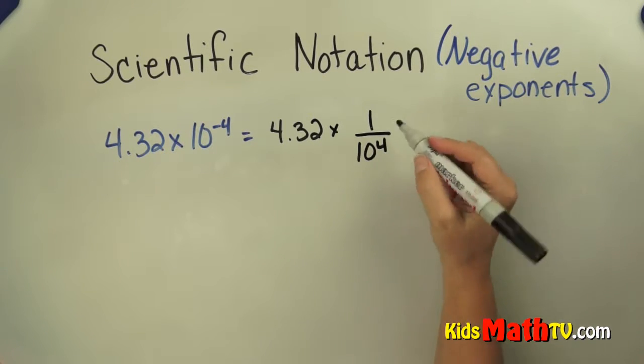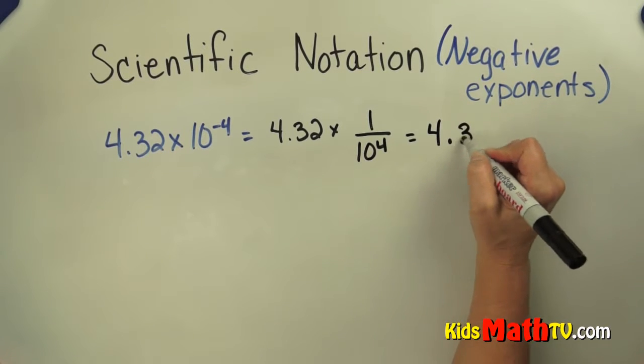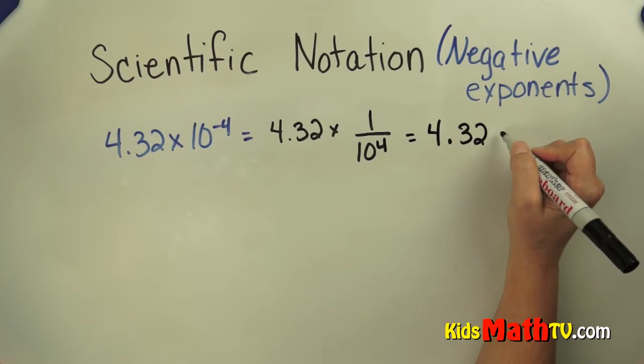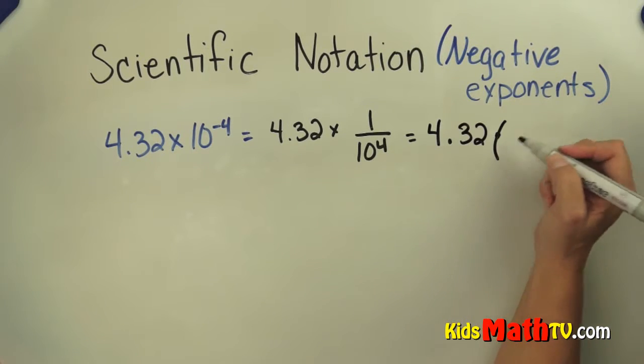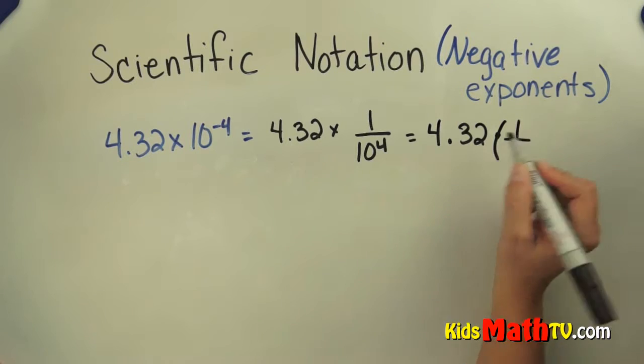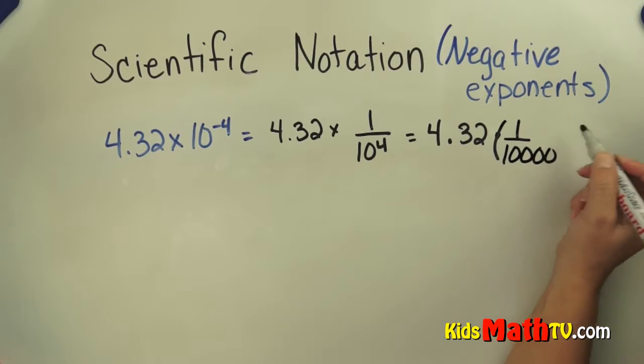So if we write this out, we can do that as 4.32 times, I'm going to use the dot for the multiplication sign, 1 over, well 10 to the 4th is 10,000.